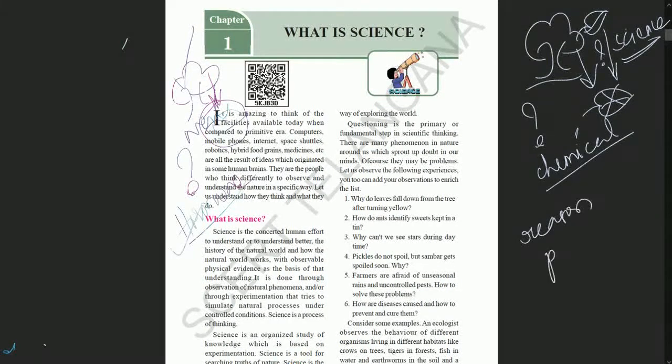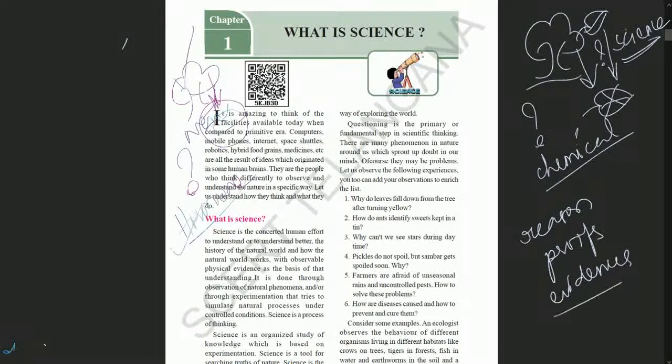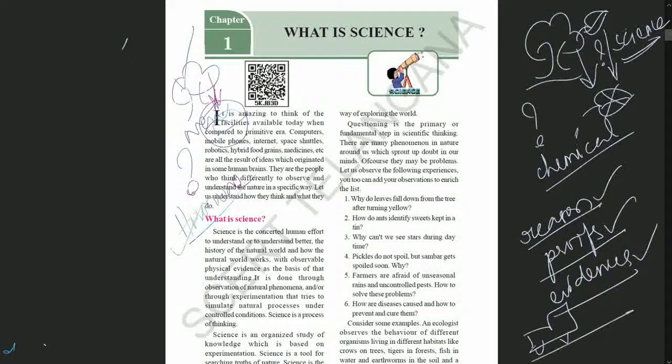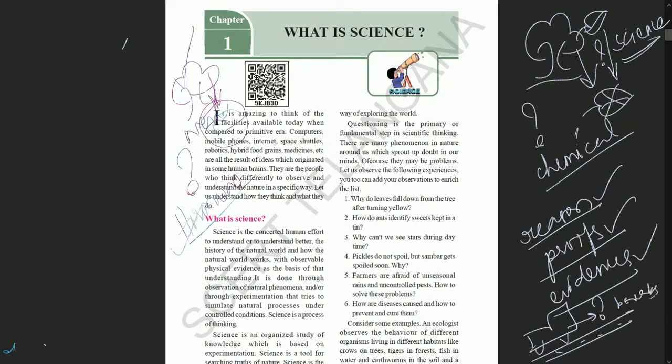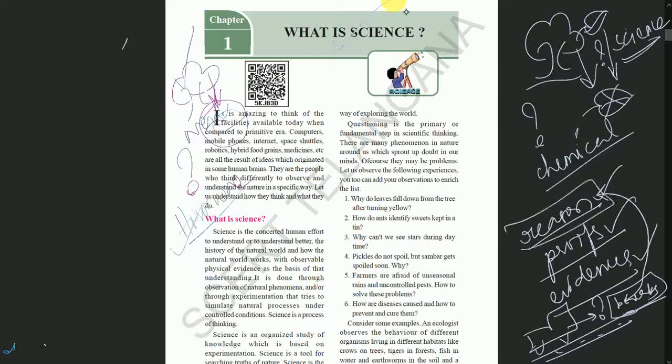We need reason. Science always explains reasons, proofs, and evidence. These three are important. For example, if a lorry has fallen down in an accident, why did it fall? The brakes did not work well. This is one reason. This explains what science is - a reason is needed, proofs are needed, evidence is needed.